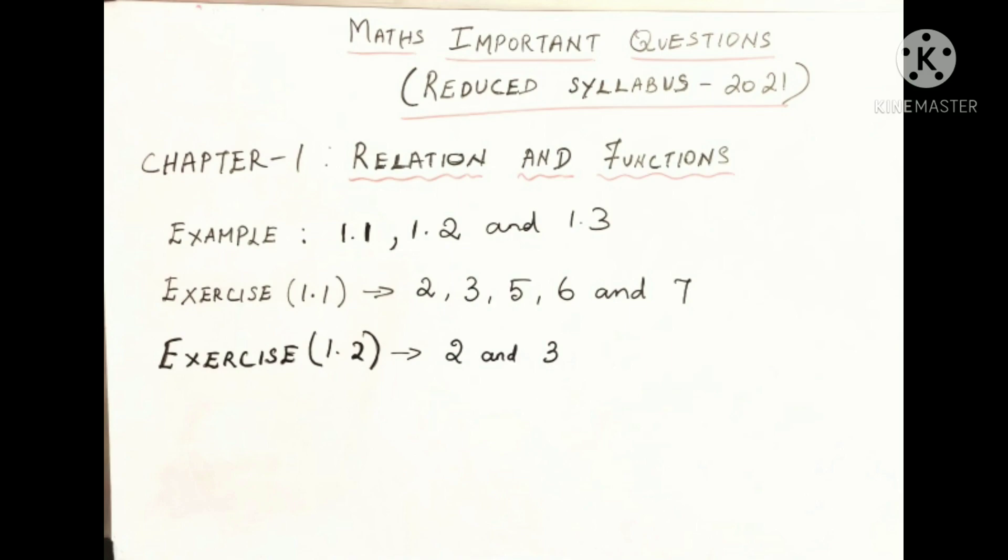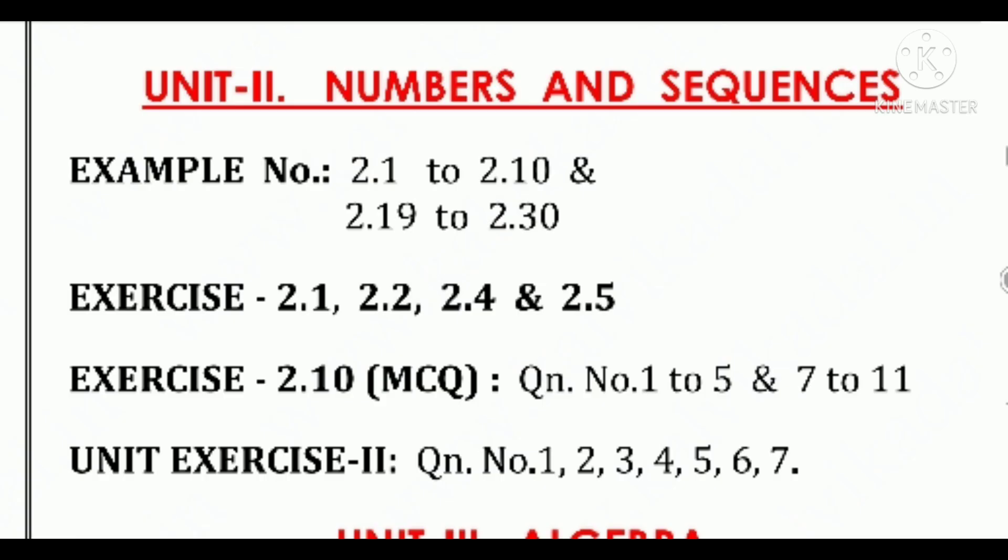Now let's go to the second chapter. Second chapter is numbers and sequences. Example sum is 2.1 to 2.10 and 2.19 to 2.30. Exercise is 2.1, 2.2, 2.4 and 2.5. Exercise 2.10 which means one word, question 1 to 5 and 7 to 11. Unit exercise is 1, 2, 3, 4, 5, 6, 7. First 7 sums. This is important.